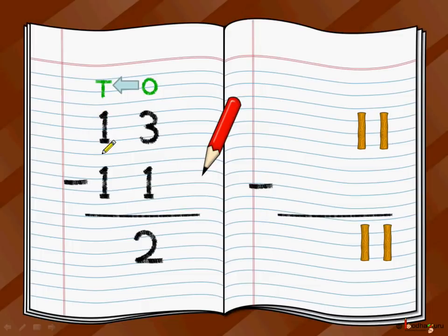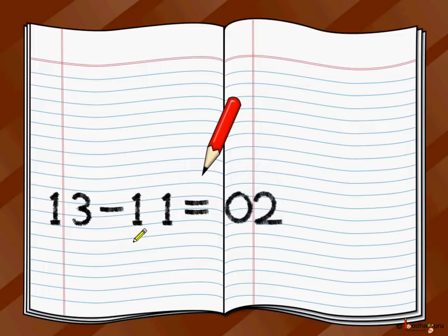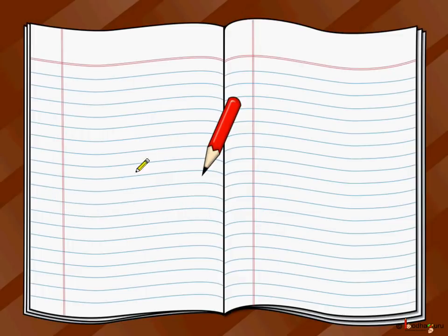You do one minus one is equal to zero. So 13 minus 11 is equal to 02, or we write it as 13 minus 11 is equal to 02. This is what we learned in our last video. Let's take some more examples.